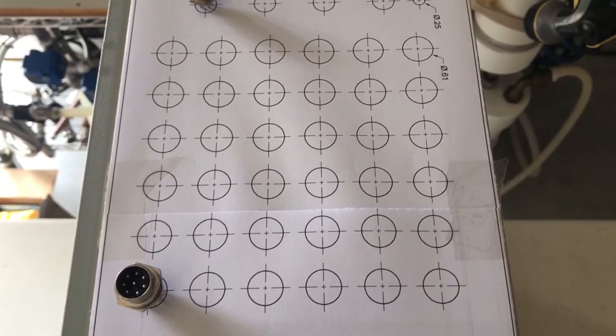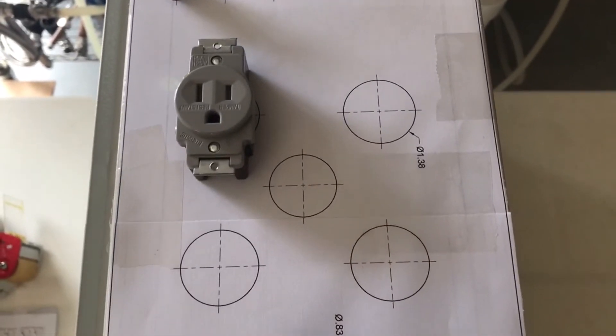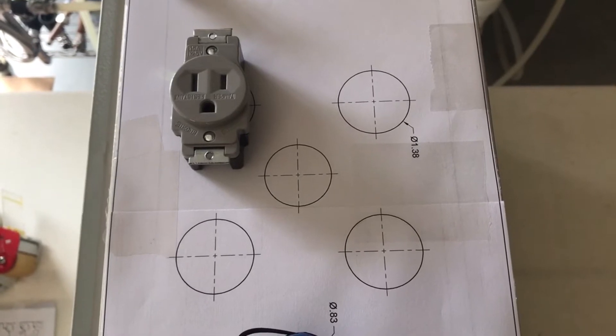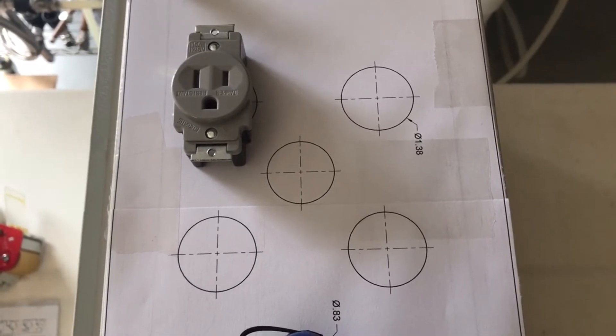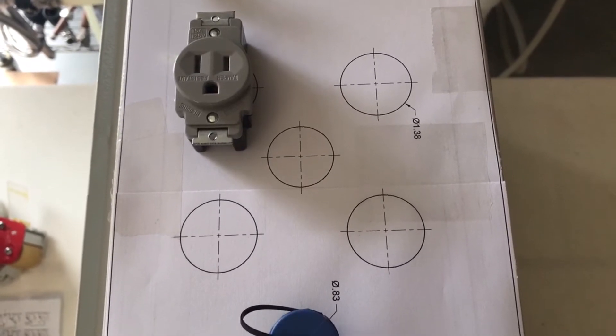Below those are the I.O. connectors. Below that are five NEMA 515 receptacles. Four will be switched by the SSR pack and one will be on full-time as an accessory.